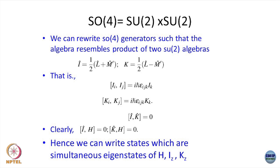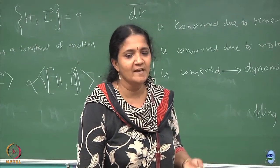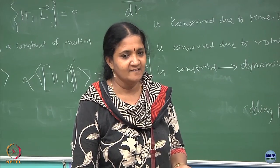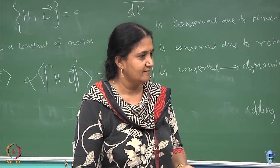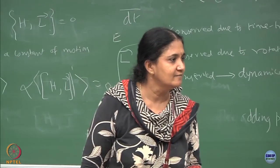I think one of the assignment problems had to do with this — if you have done the assignments, you will appreciate what I am saying. Now, if I have given the information that the Hamiltonian commutes with I and the Hamiltonian commutes with K — where I has components Ix, Iy, Iz and K has components Kx, Ky, Kz — then what do I write for a state? The state should be a simultaneous eigenstate of the Hamiltonian, Iz, and Kz. Of course, you can also say that because of SU(2) it should also be an eigenstate of I-squared and K-squared.